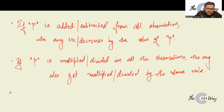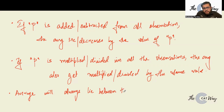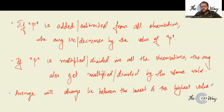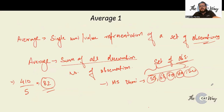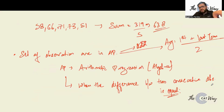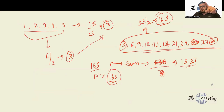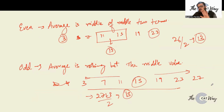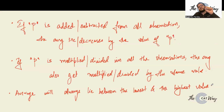One more important property: the average value will always lie between the lowest and the highest value in the set of observations. The average is always somewhere in the middle of the lowest and highest values.